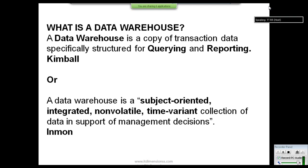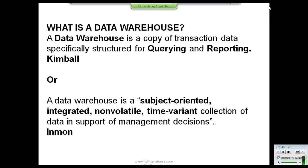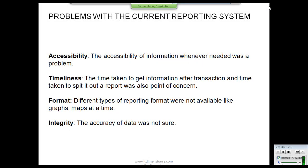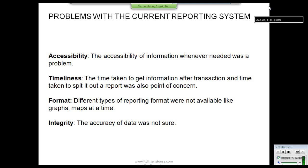A company wants to implement their own data warehouse system. They already have a system implemented, but it is not a data warehouse — they are using another system and it is not a perfect system. There are a lot of problems with it. The main problems they encounter are accessibility, timeliness, format, and integrity. When they try to access data from their current system they face a lot of problems — that is an accessibility issue. Timeliness deals with the time taken to generate a report or pull data, which is huge.